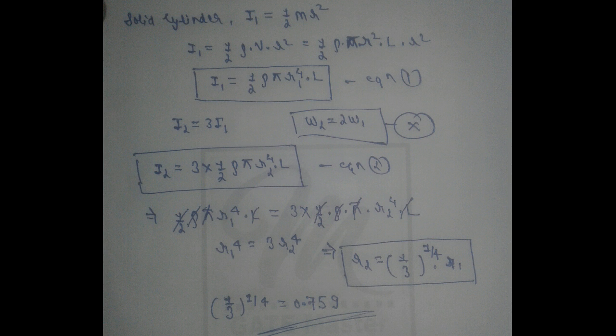Let us suppose it as I1. I1 = ½, we have to change mass into density into volume, that is ρVr². So for the value of V, that is volume πr²l. After solving we get I1 = ½ρπr1⁴l. This is equation one.